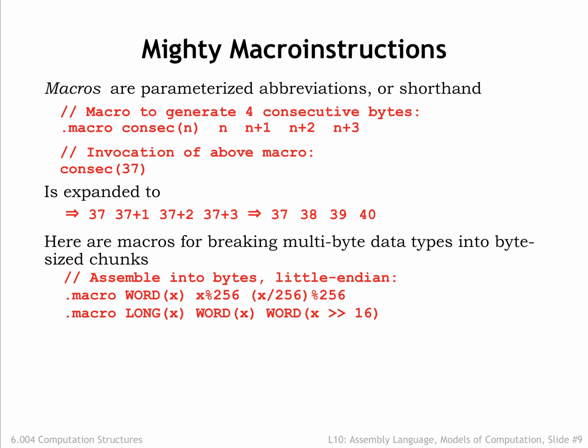And for the macro LONG, which assembles its argument into four consecutive bytes using the WORD macro to process the low 16 bits of the value, then the high 16 bits of the value.